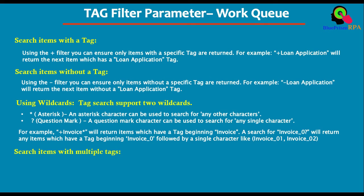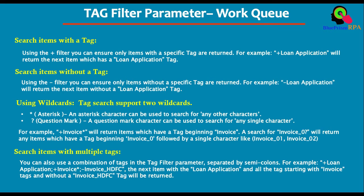Search items with multiple tags: sometimes you want to apply multiple tags when getting the next queue item. You can use a combination of tags in the tag filter parameter separated by semicolons. For example: '+loan application;+invoice*;-invoice_HDFC' — this returns items with the 'loan application' tag and any tag starting with 'invoice', but without the 'invoice_HDFC' tag.